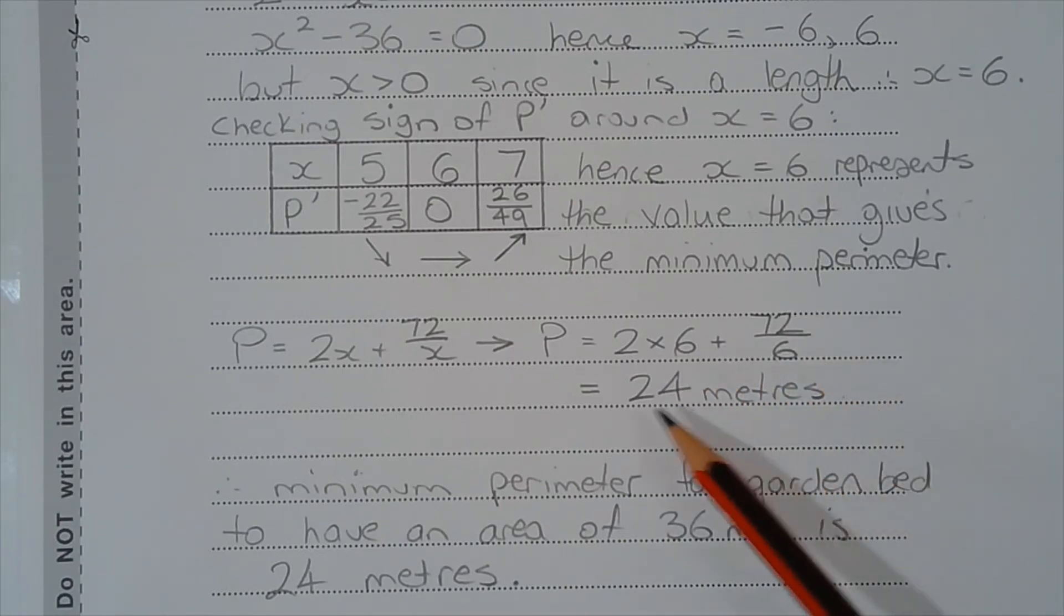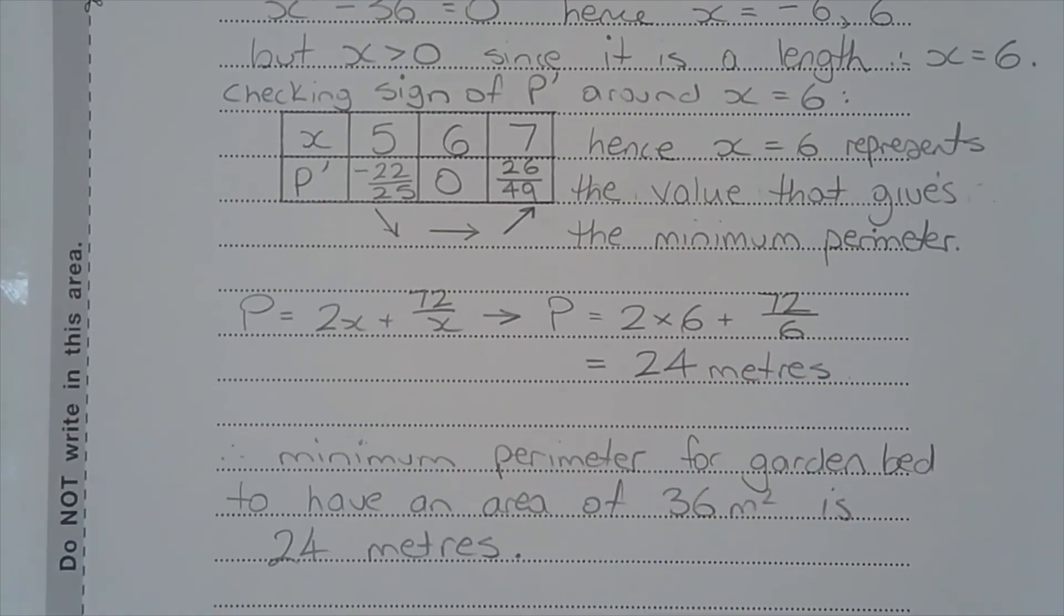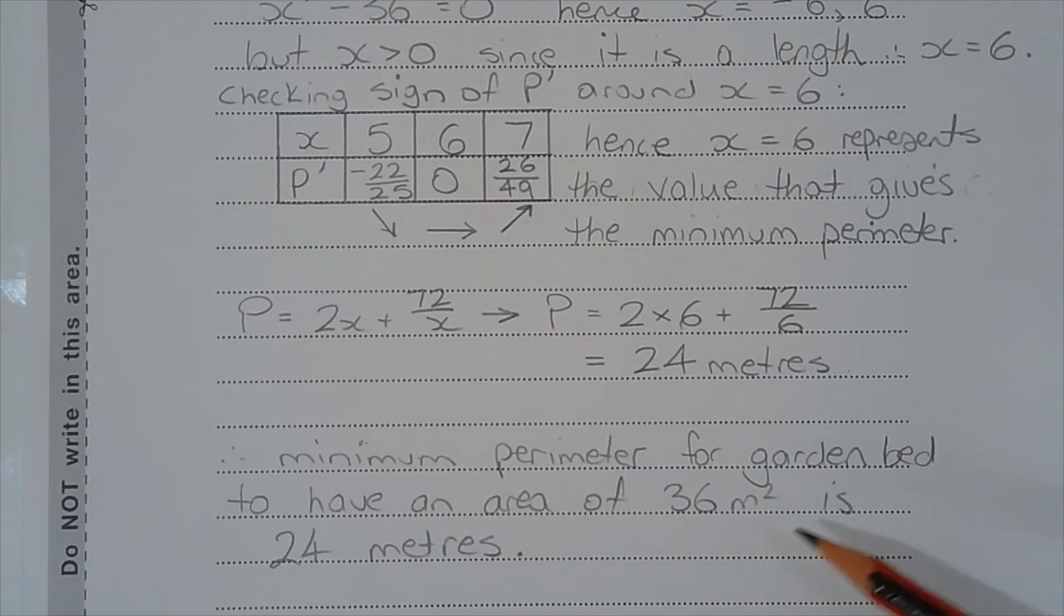And therefore the minimum perimeter for the garden bed to have an area of 36 square meters is 24 meters.